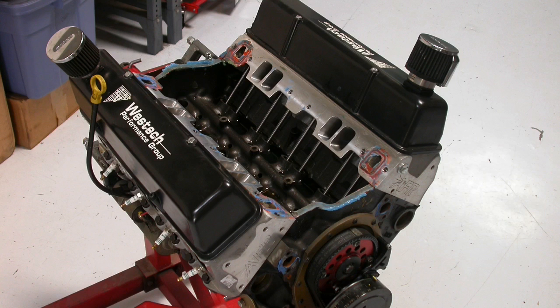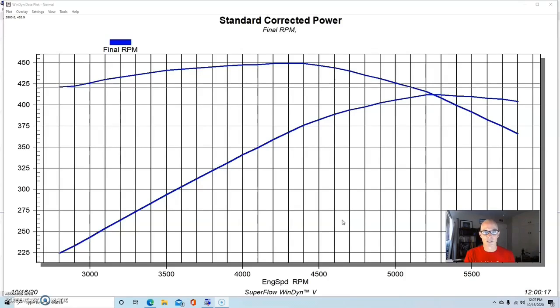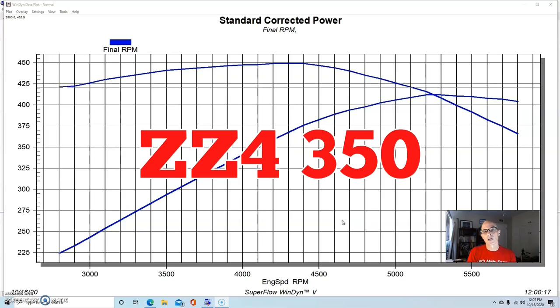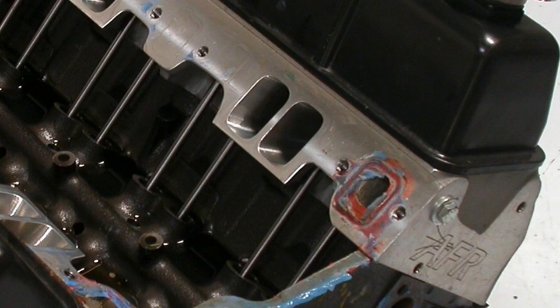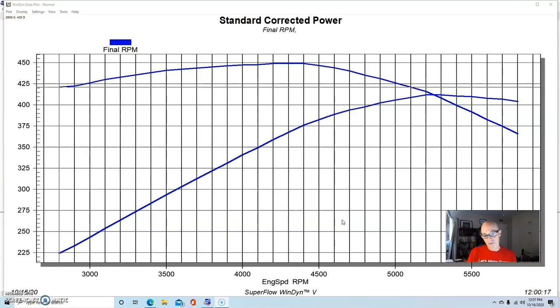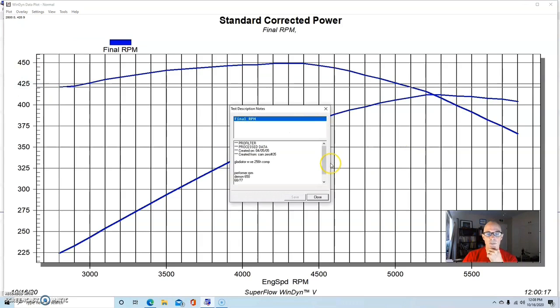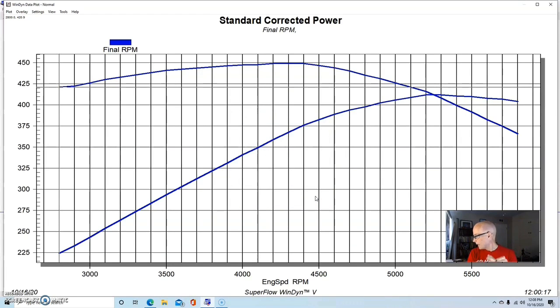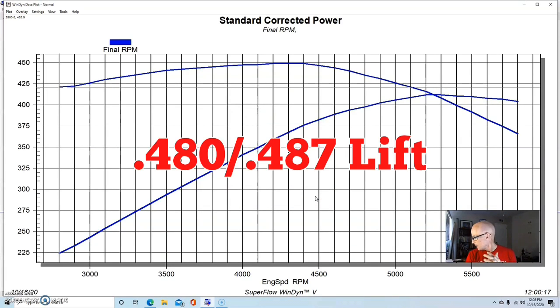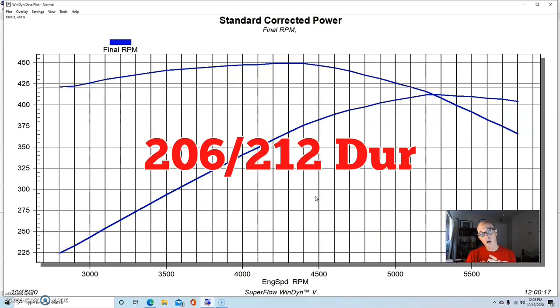They had since put a set of Airflow Research 195 heads on it, and for this test I actually installed a very small camshaft. This was an Extreme Energy combination, but it was a very small Extreme Energy. It's actually a 258, and that cam was a 0.480/0.487 lift, 206/212, as I said fairly mild camshaft, and 110-degree lobe separation angle.